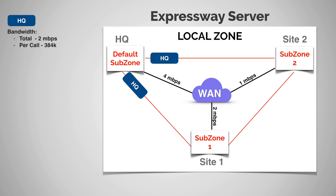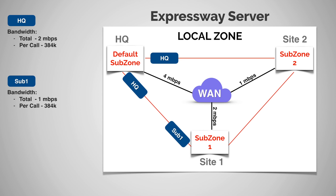I'm going to do the same thing for site one — create another pipe and call it sub one. For per call, 384k again because everybody gets 384 regardless. For the total bandwidth of the sub one pipe, because site one has a two meg capability, I'll take half of that — one meg — and apply it to the total bandwidth of the sub one pipe. Then I'll apply that pipe to every link coming out of that subzone as well. As you can see, this results in two pipes on a single link.